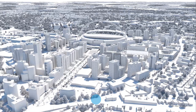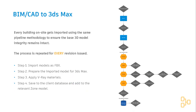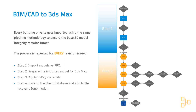Here's the 3ds Max model. You can see we've got the on-site model, but we've also built the surrounding context to allow us to place the camera anywhere on site. Let's dive into the BIM to 3ds Max importing process — the steps we go through for every model that comes to us, and this applies to every revision as well. Step one is importing — we import everything as FBX. Step two, we prepare the 3D model for 3ds Max. Then we apply the materials and save to the client database, which then gets saved to the relevant zone model.